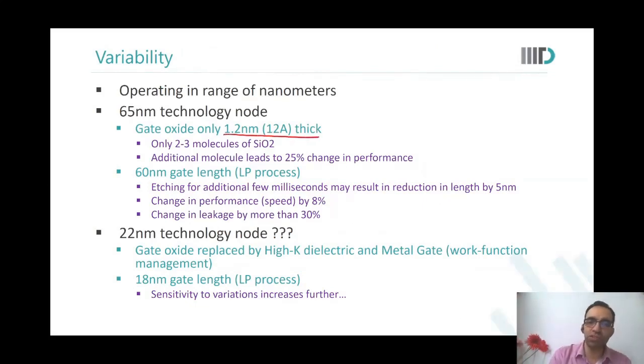Come to think of it - in 65 nanometer technology, the gate oxide thickness is only 12 angstroms, which is only two to three molecules of silicon dioxide. Add one more molecule and what has happened? The gate oxide thickness has changed by 25-30 percent. Let's say I etched the length a little more. Instead of 65-60 nanometers, I ended up manufacturing 55. What happens? Performance improves a bit - 8 percent performance change. Leakage goes by more than 30 percent. I ended up making 55 instead of 60.